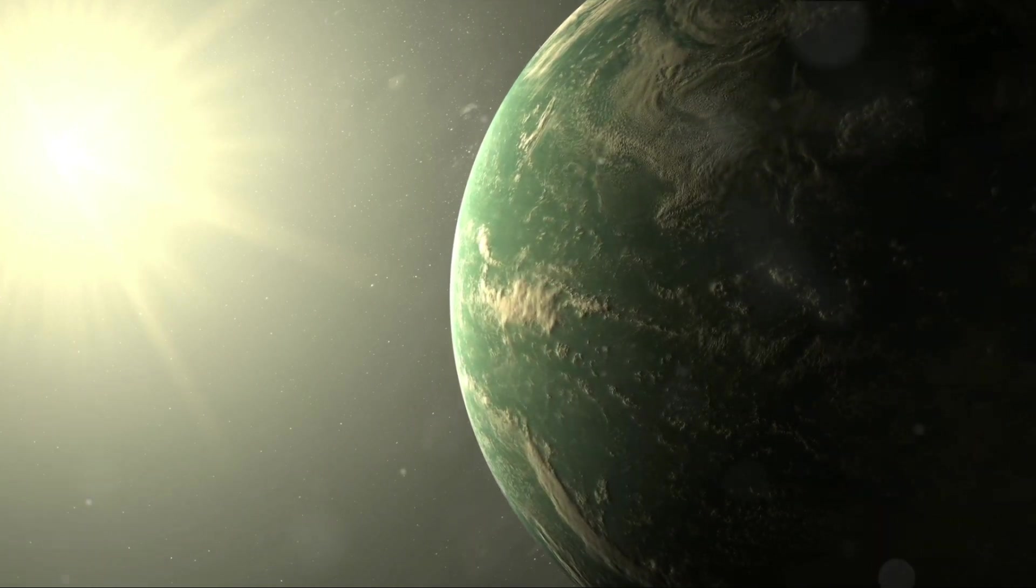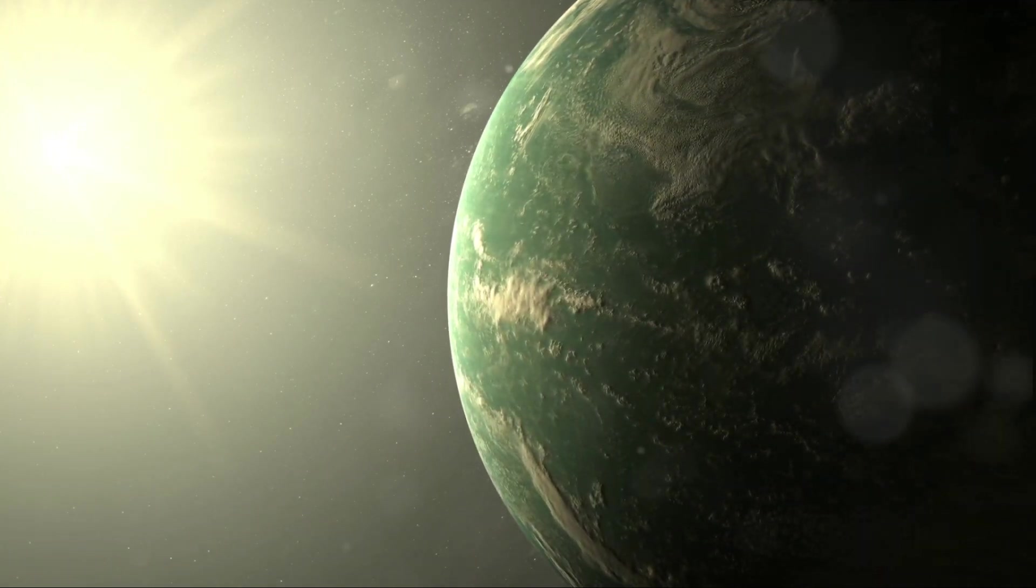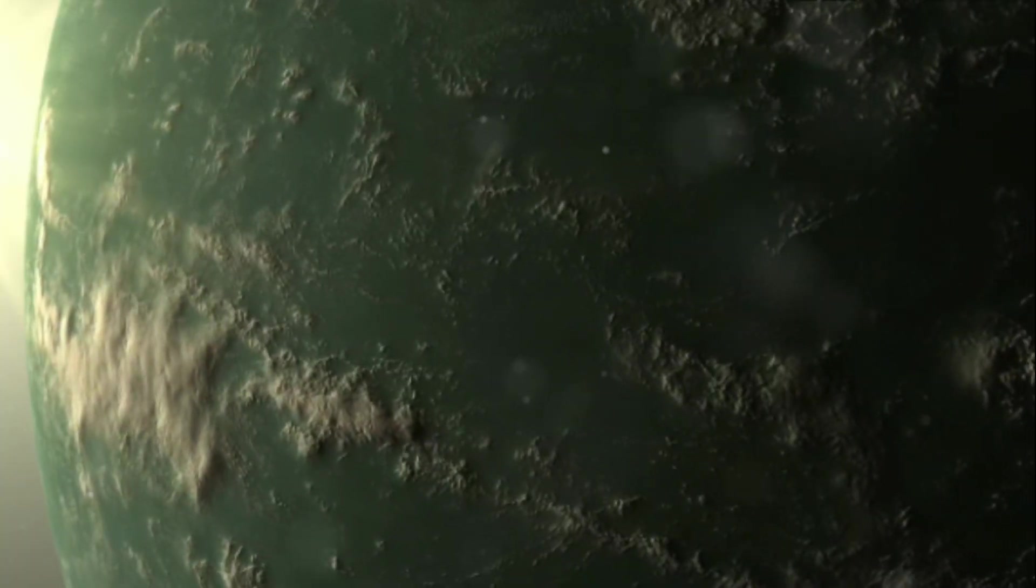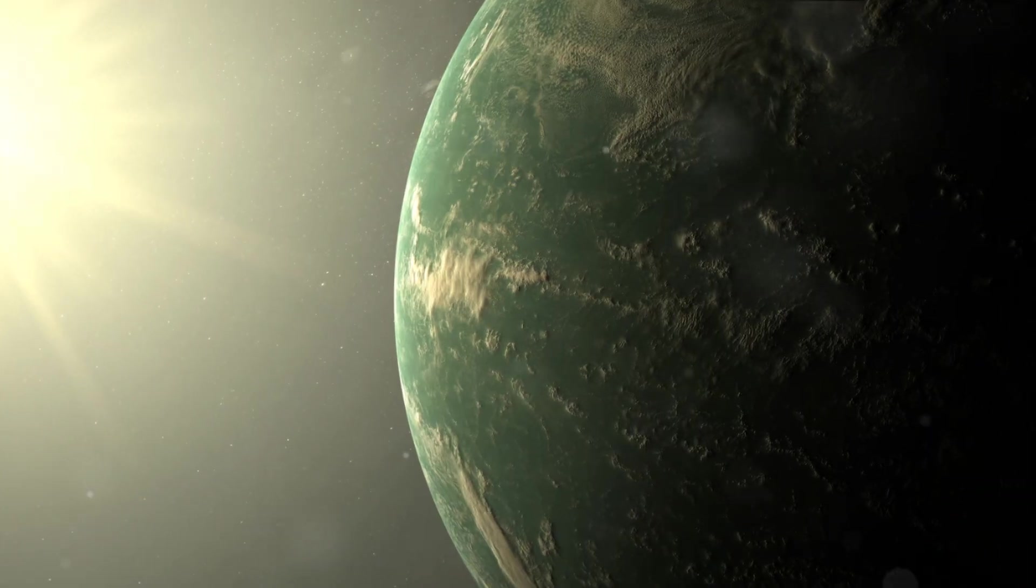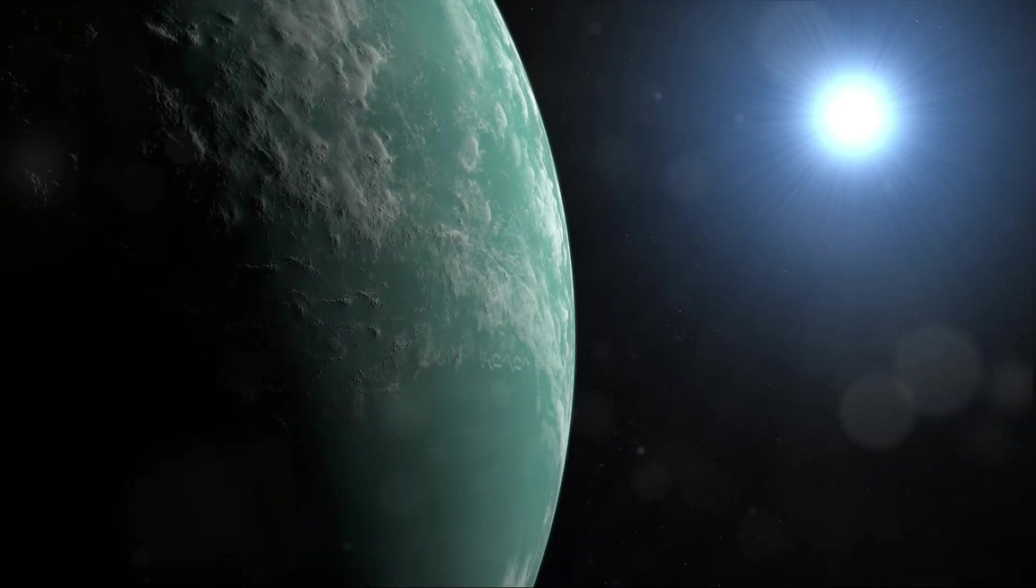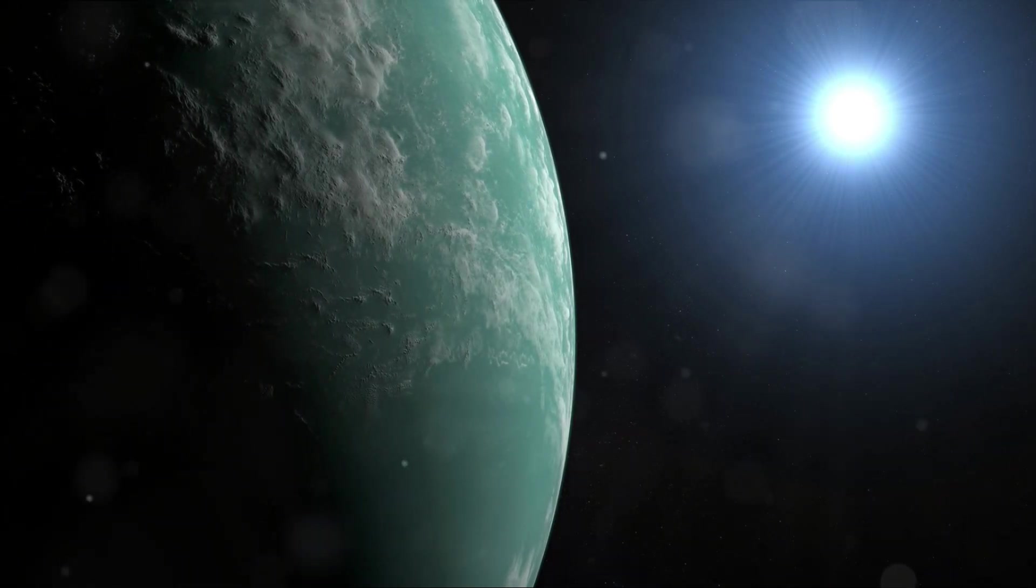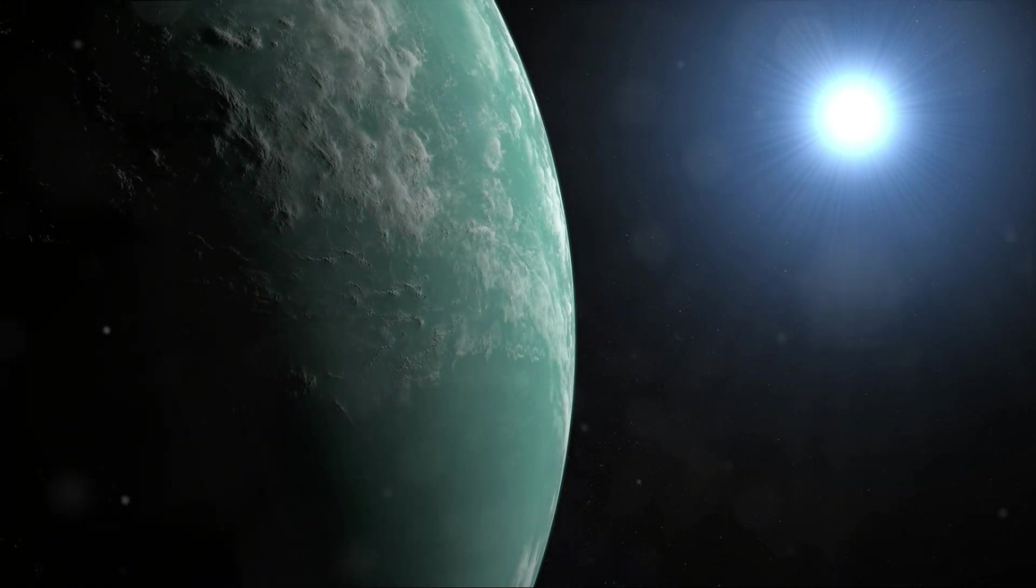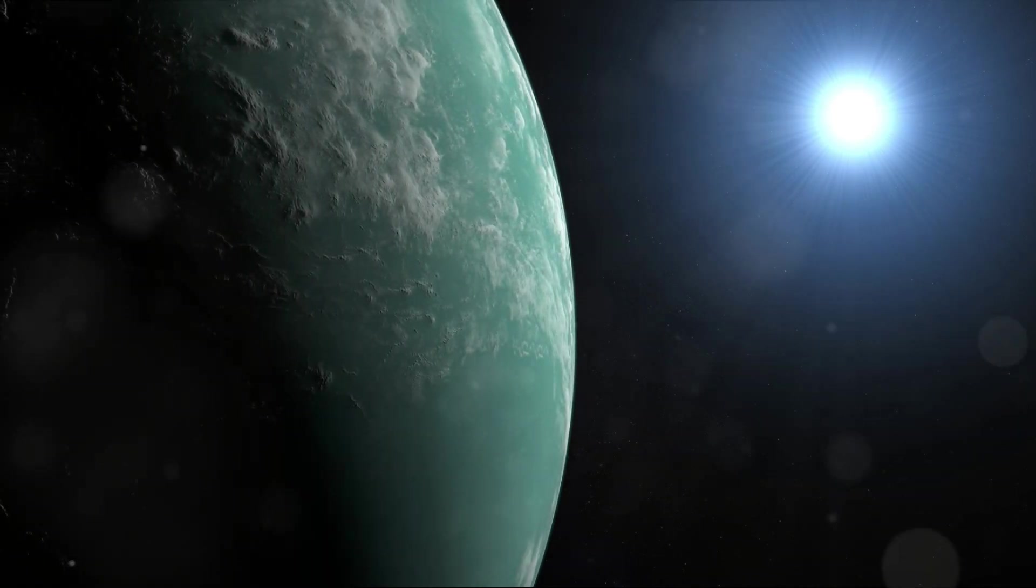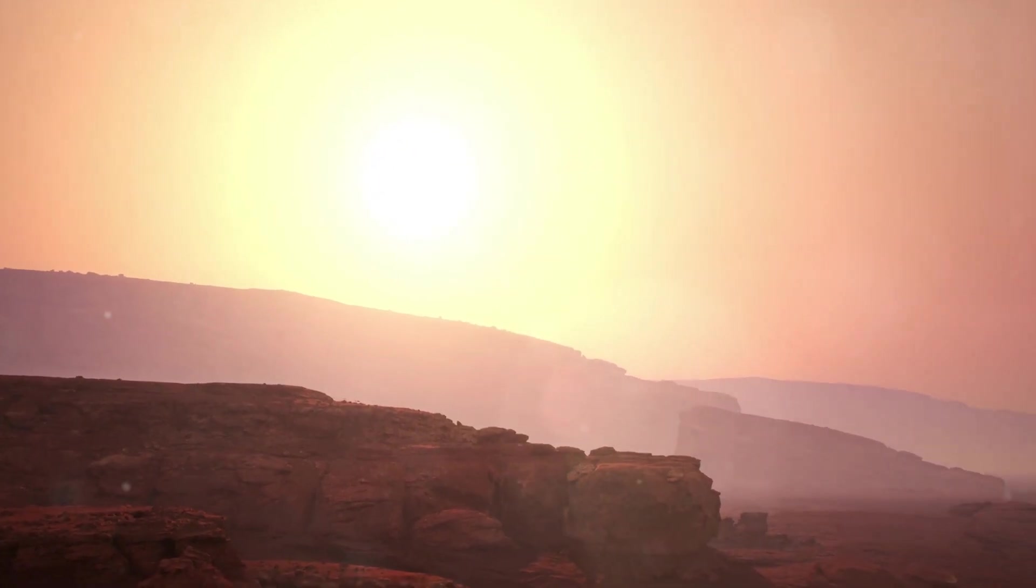The Kepler 385 system is a fascinating collection of celestial bodies, each with its own unique characteristics. It's a microcosm that gives us a glimpse into the grandeur and diversity of our universe. Let's start with the first three: Kepler 385b, 385c, and 385d. These planets, located close to their star, are rocky and terrestrial, much like our own Earth. Yet each of them is distinct in its own way.